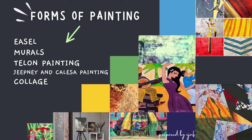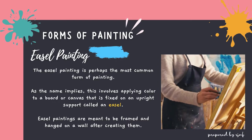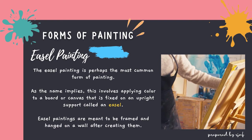Easel painting is perhaps the most common form of painting. As the name implies, this involves applying color to a board or canvas that is fixed on an upright support called an easel. Easel paintings are meant to be framed and hanged on a wall after creating them.